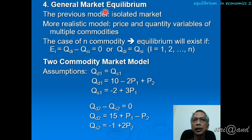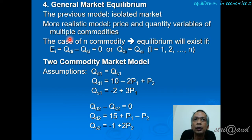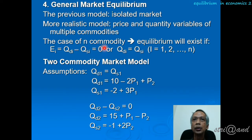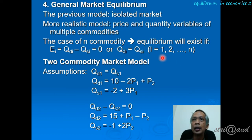In general equilibrium analysis, we are talking about multiple commodities — all commodities in the market. When we have N commodities in the market, the requirement for equilibrium is that excess demand equals zero, or the quantity demanded minus the quantity supplied equals zero. This applies to all commodities: commodity one, commodity two, and all other commodities until the last one.